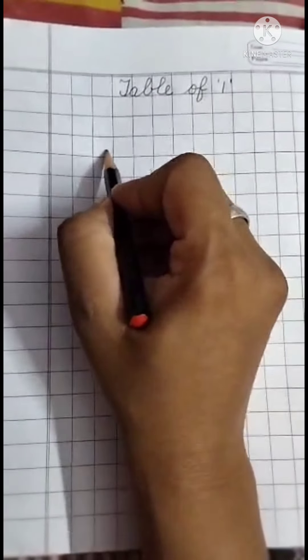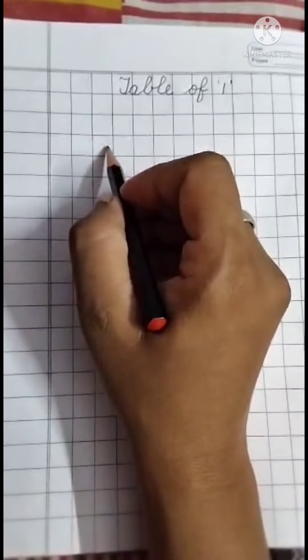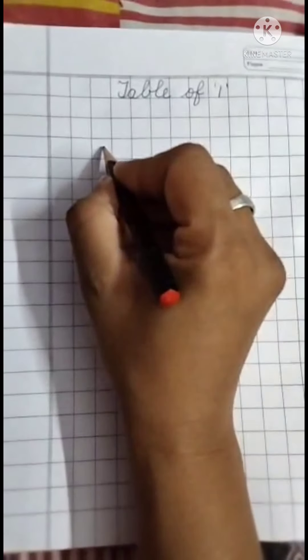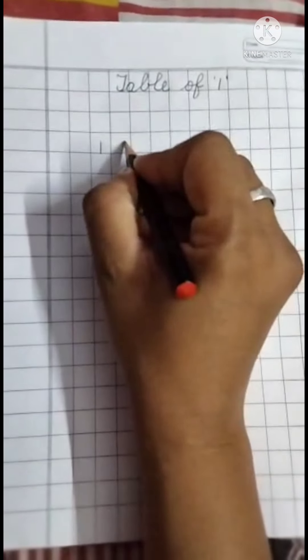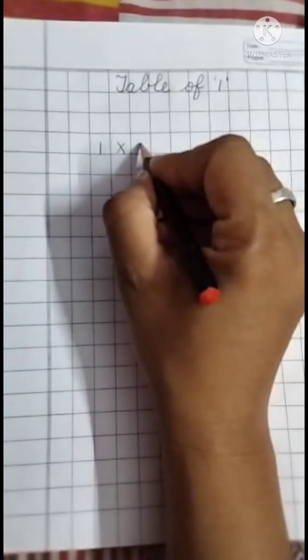One, two, three. Here. This box. Now start writing. One. Multiply. One.